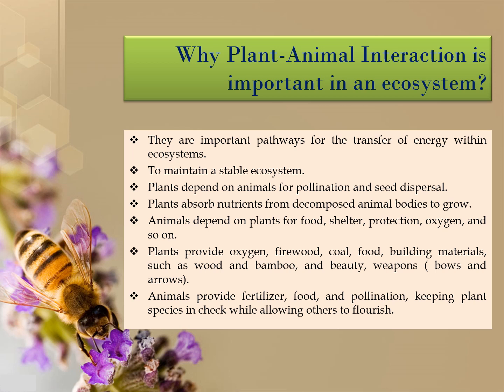Plants provide oxygen, firewood, coal, food, building materials such as wood and bamboo, and also beauty and weapons like bow and arrow. Animals provide fertilizer, food, and pollination, keeping plant species in check while allowing others to flourish.